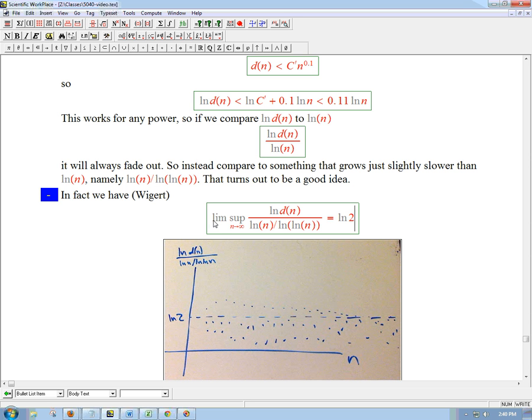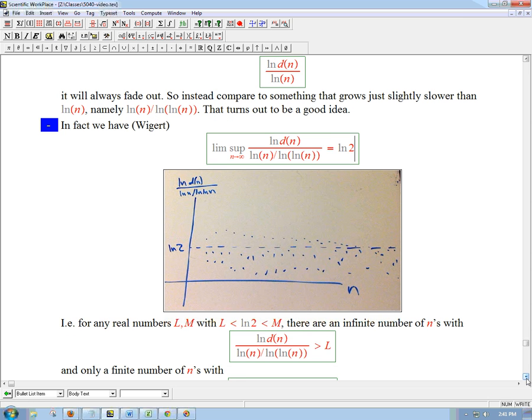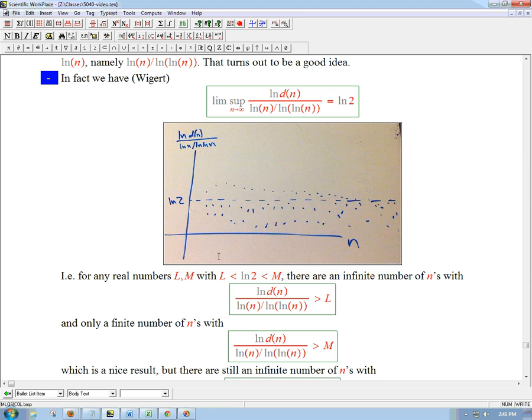So what does it mean to say the lim sup is equal to ln2? I'm not saying that the limit is equal to that, and it's a more subtle statement. Here's what it means. Here's a very sketchy picture I put together here. So we graph this weird measure, ln(d(n))/(ln(n)/ln(ln(n))), as a function of n. And here's the straight line ln2 as this dashed line. What it says is that roughly we're going to get a bunch of up and down oscillation. It says that if I put a band around ln2, let's say l is a number just a little bit less than ln2, and m is a number that's a little bit bigger than ln2.